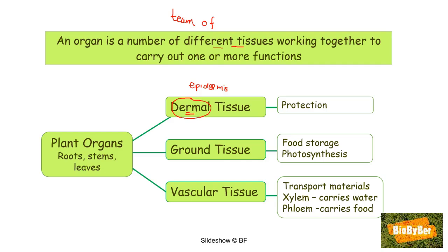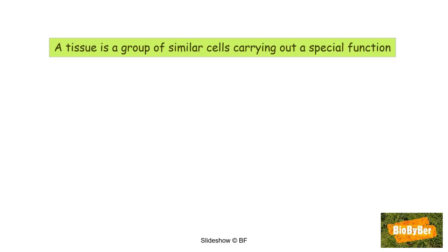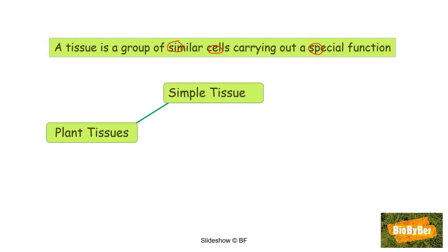Now that we have observed all those tissues in the plant, we need to remember that tissues are made of cells. A tissue is a group of similar cells carrying out a special function. When we look at tissues in a plant, we hope to see the cells from which they are made.